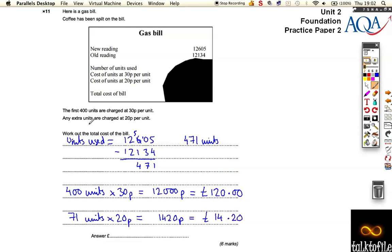And then all we've got to do to find out the total cost is just add those up. So we get 134 pounds and 20 pence, and that's the cost of the bill.